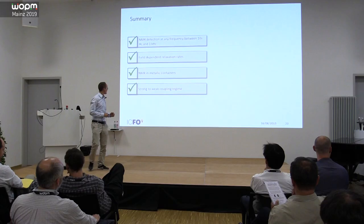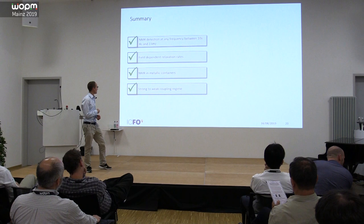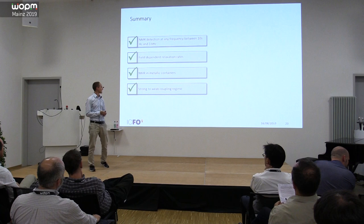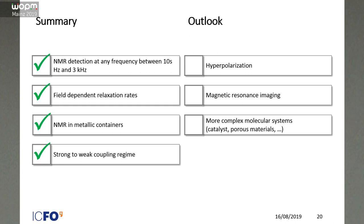So just to summarize that, I showed you, well, in general that we're able to do nuclear magnetic resonance up to 3 kHz. We can use it for field dependent relaxation rates, we can do that for NMR in metallic containers, as well as the strong to weak coupling regime. In the future we want to use some hyperpolarization to further enhance the signal, as well as magnetic resonance imaging, and of course we want to do more complex spin systems.